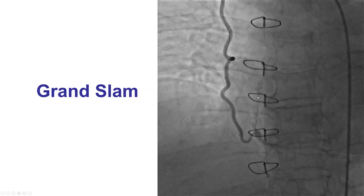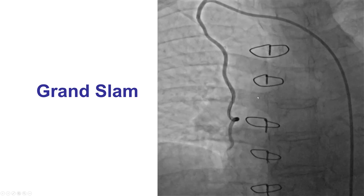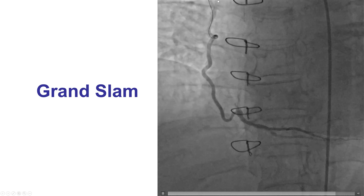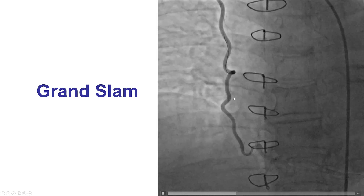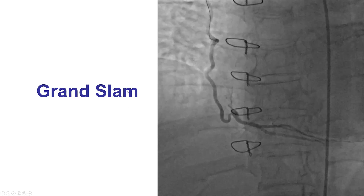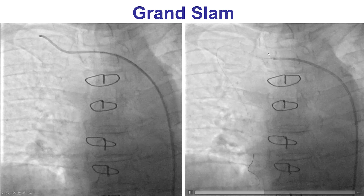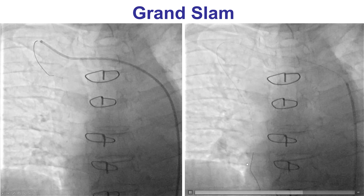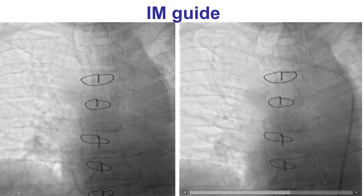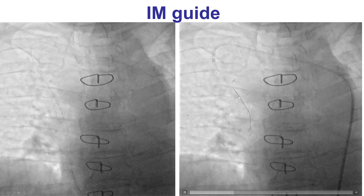We had some difficulty engaging the graft with the diagnostic catheters, which is why we decided to use the guidewire exchange technique for inserting the guide catheter. Through the diagnostic catheter, we advanced a supportive wire — a Grand Slam 300 cm wire — then removed the diagnostic catheter, leaving the supportive wire in place. Using this same rail, we were able to advance an IMA guide catheter into the origin of the RIMA graft.